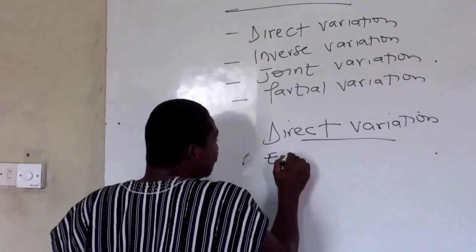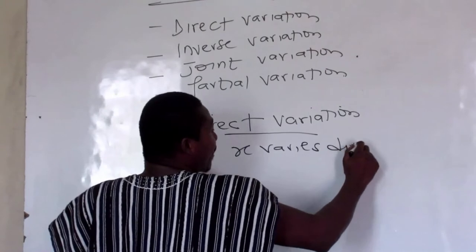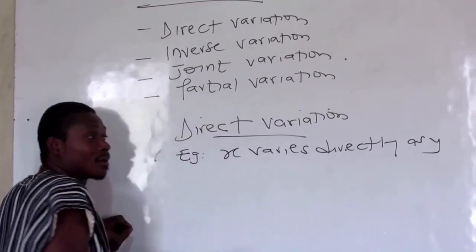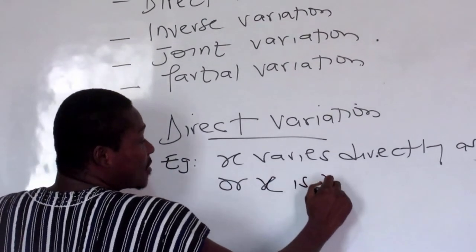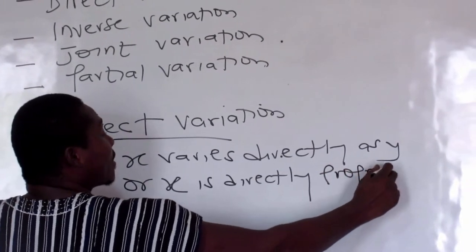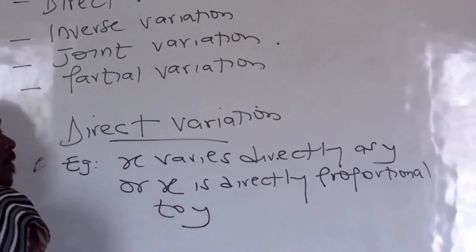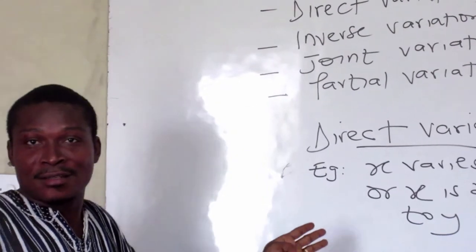When x increases, y increases. That is direct. So let's look at an example here. Example: x varies directly as y, or sometimes it can be put this way: x is directly proportional to y.